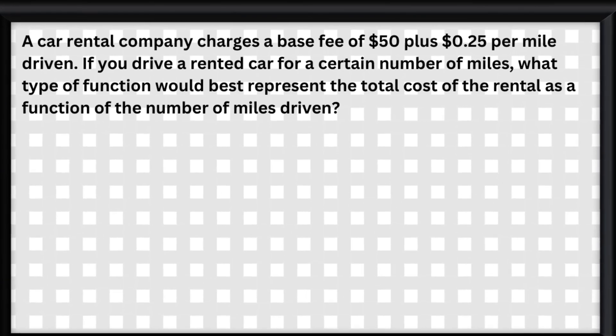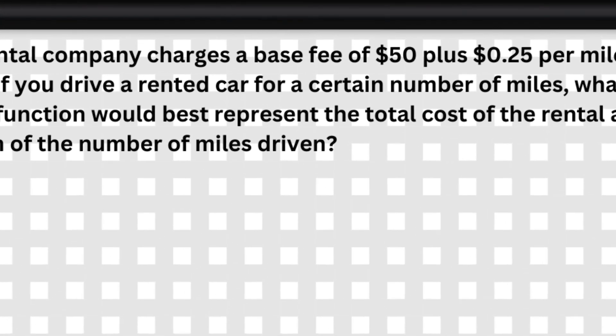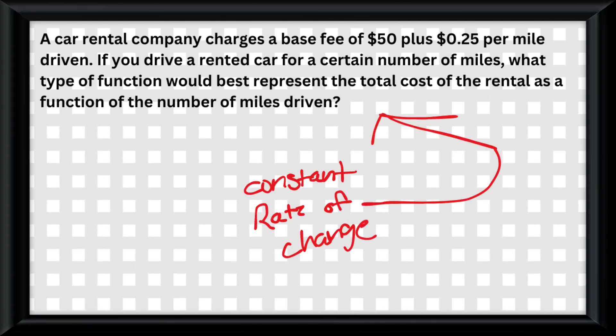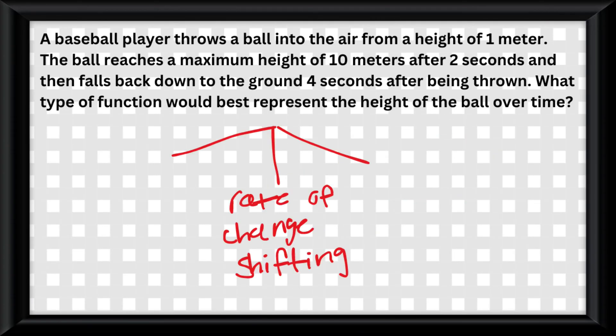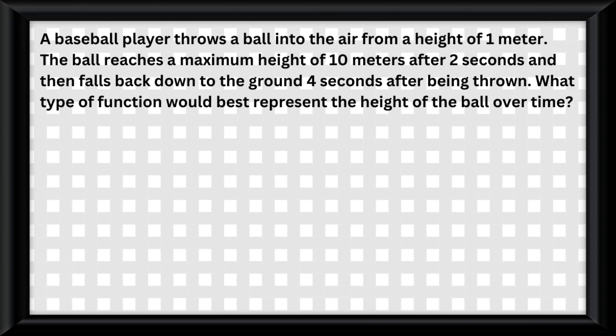A linear function will model data sets or aspects of contextual scenarios that have a constant rate of change. Quadratic functions will always have the rate of change shifting, but it's typically associated with a function that has one distinct minimum or maximum.